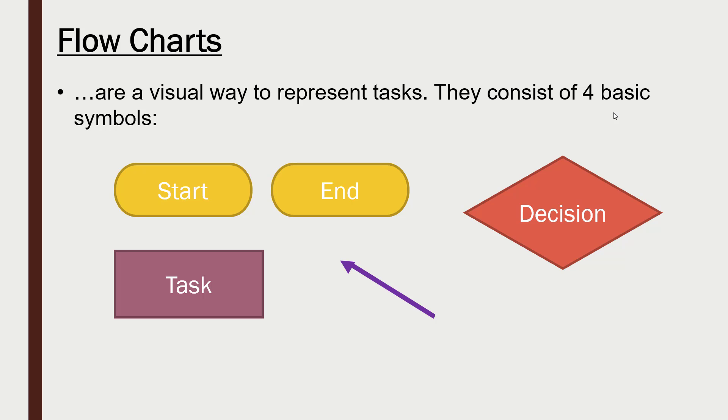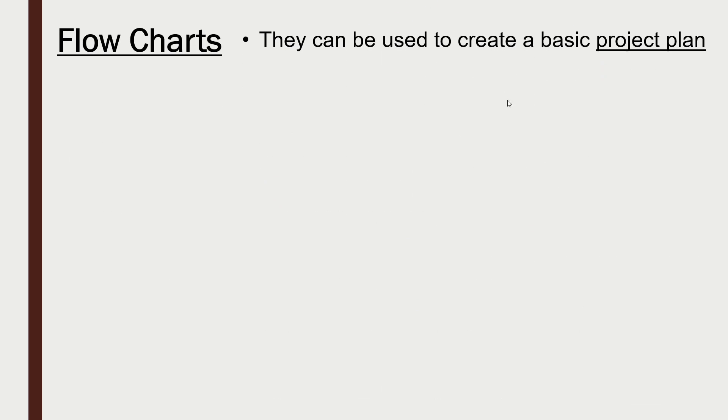So let's see how they can be used. They can be used to create usually quite a basic project plan. For example, start always starts off a flowchart, so we have one arrow coming out of start. And let's say our first task is going to be to bore the tunnel, actually drilling out the tunnel from under London if we're making Crossrail. So we're boring out the tunnel, drilling through. That's our first task.